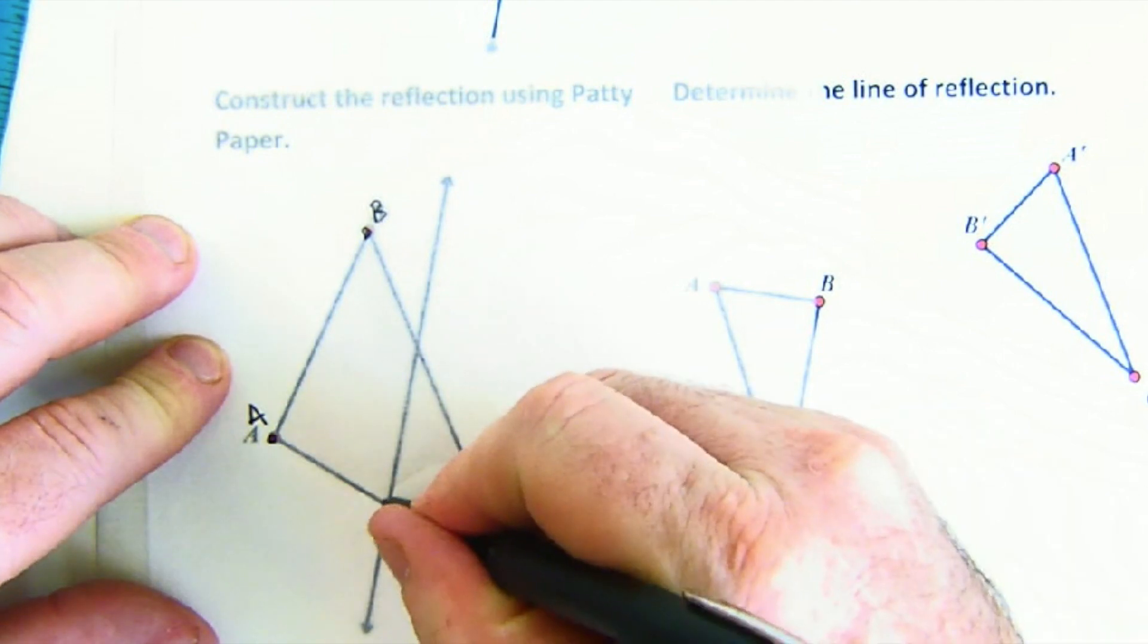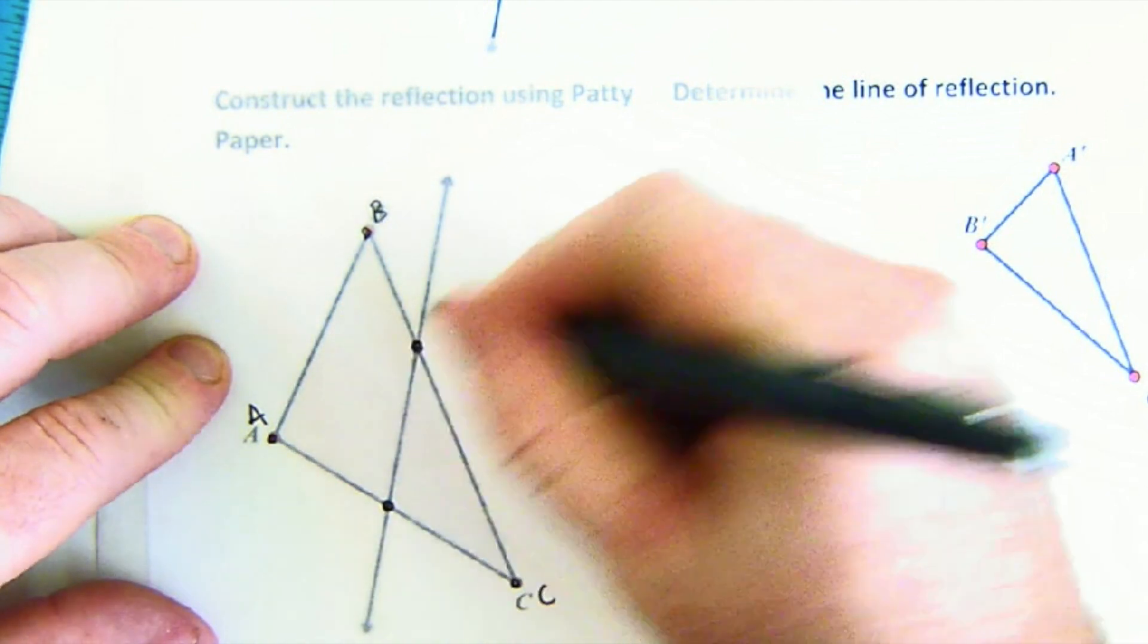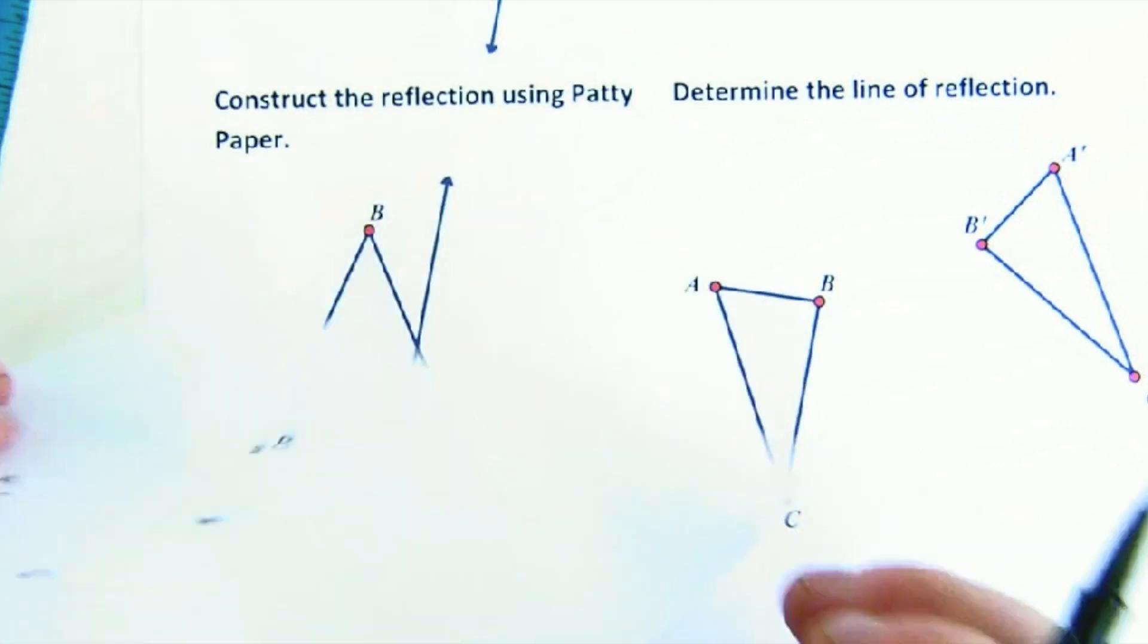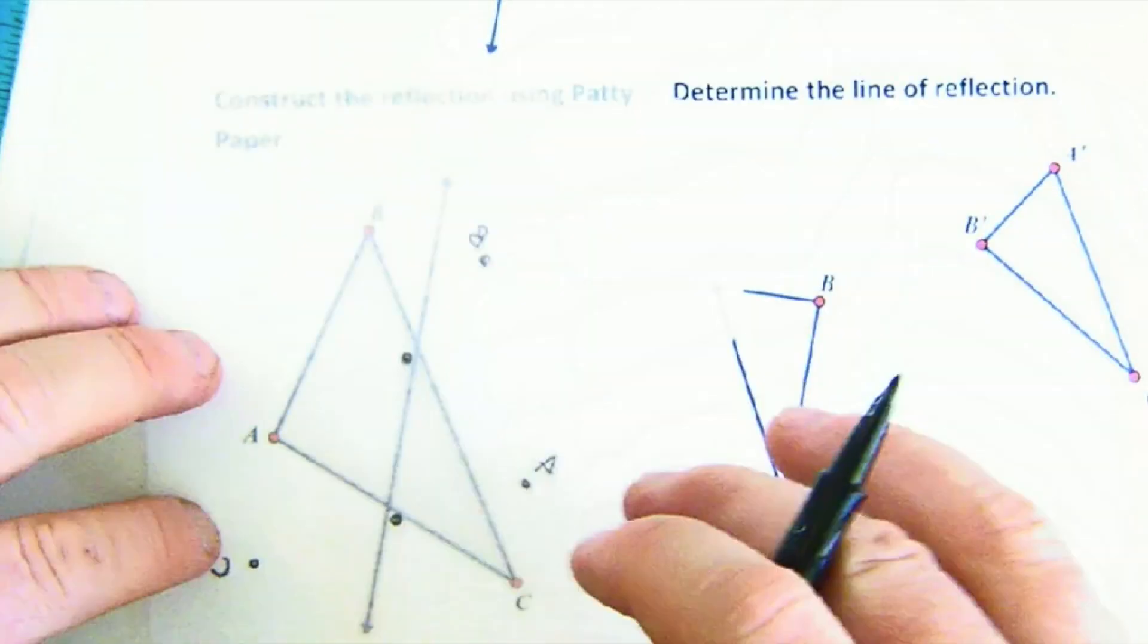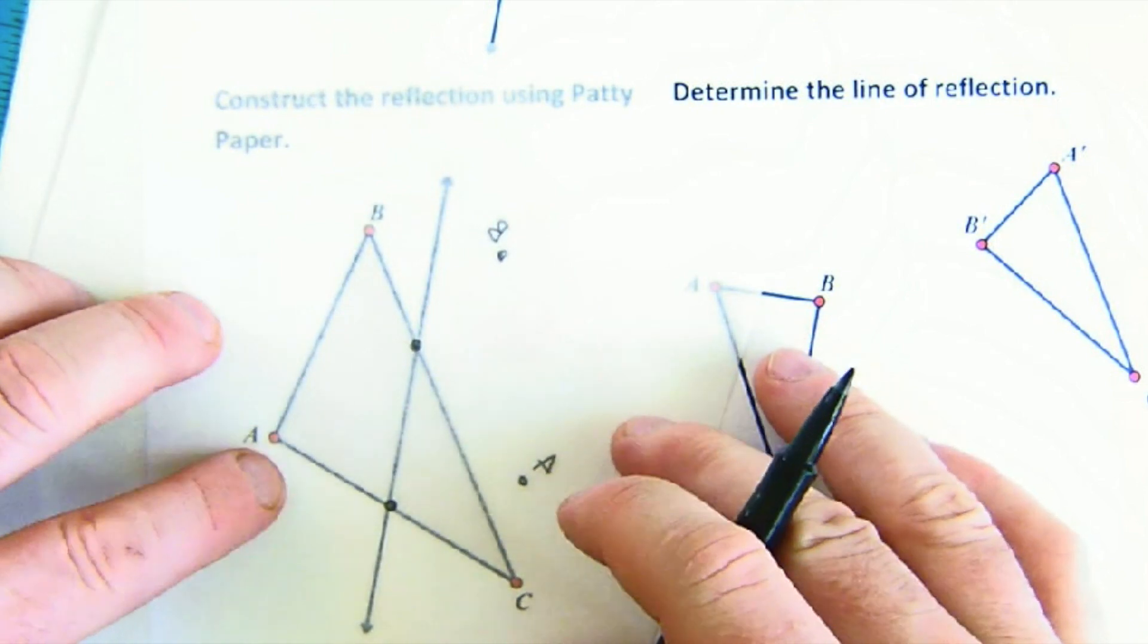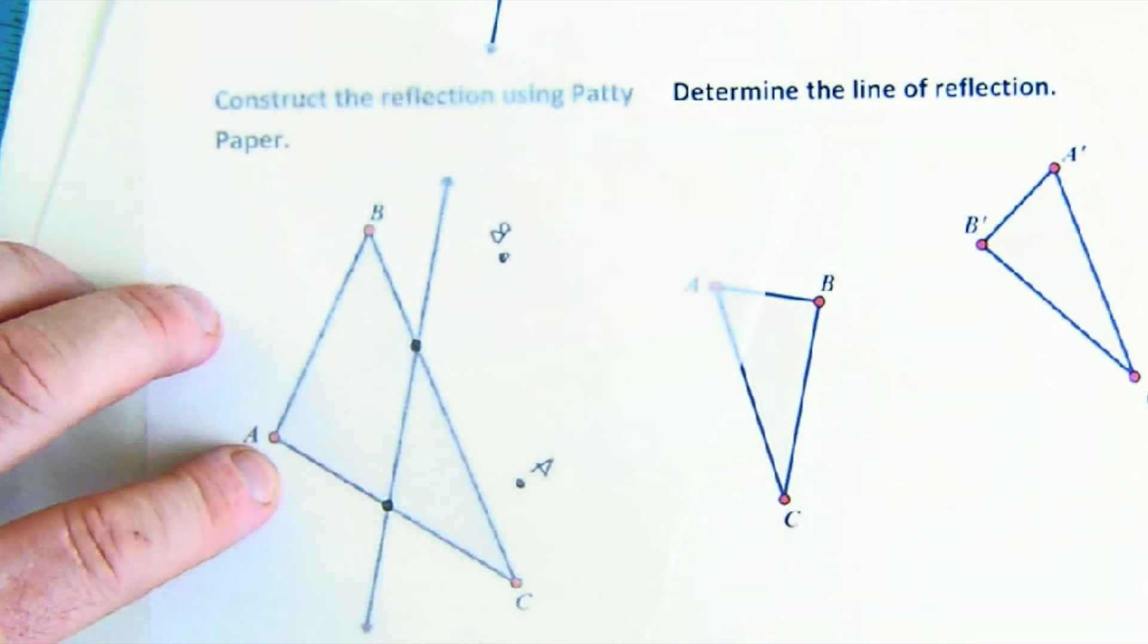And I'm going to mark the two locations on the line. The reason I'm going to do that is because they won't move in a reflection. Remember, points on the line do not move. And so, I'm going to match those up. And now, I see my locations.